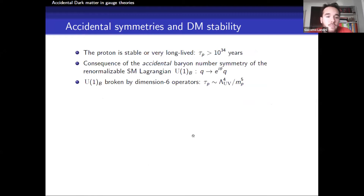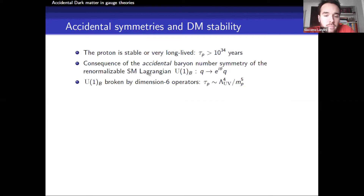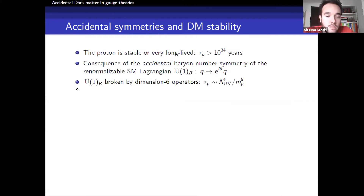Let's go back to the standard model for a moment and consider the proton. We all know that the proton is stable, or at least its lifetime is very, very long. This is a consequence of an accidental symmetry of the renormalizable standard model Lagrangian, which is the baryon number — a U(1) global symmetry that arises as a consequence of gauge invariance. The proton, being the lightest baryon, is automatically stable. Of course, it could decay if we allow higher-dimensional operators which break baryon number, but since they are suppressed by some cutoff scale, their effect is tiny and the proton is still very long-lived.